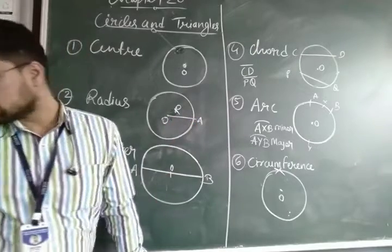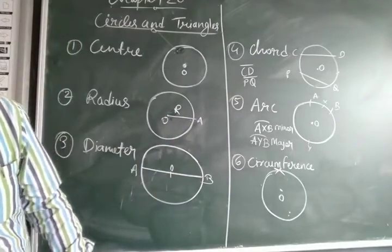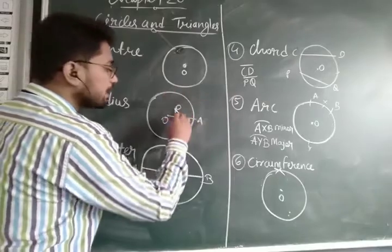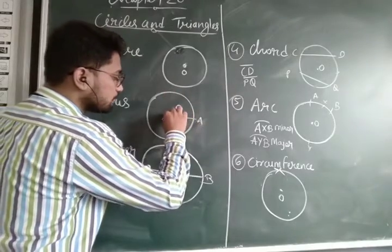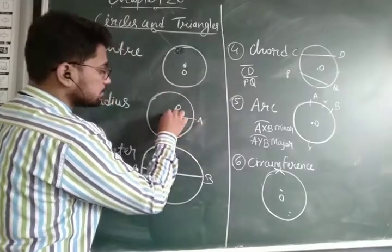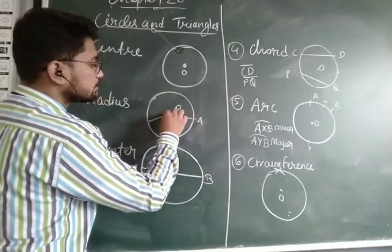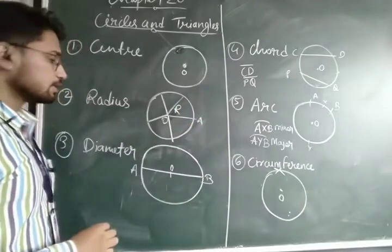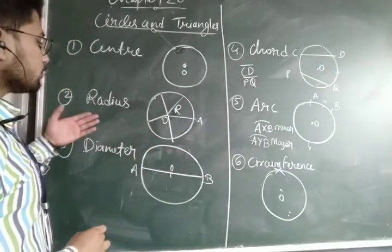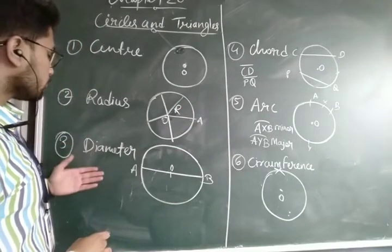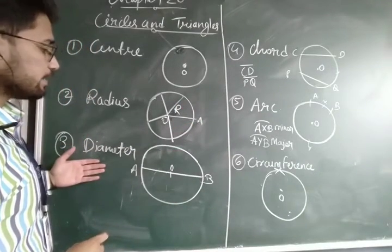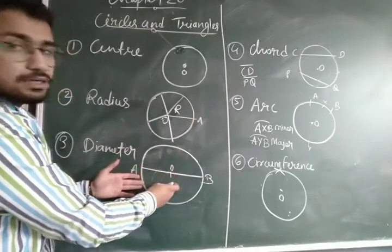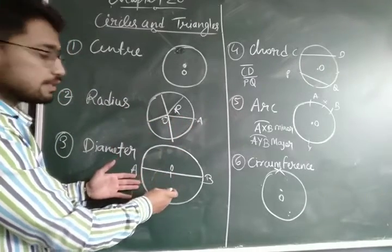This radius can be taken from anywhere — like this or like this — and it will have the same value. Now let's jump on to the diameter. The double of the radius is known as the diameter.